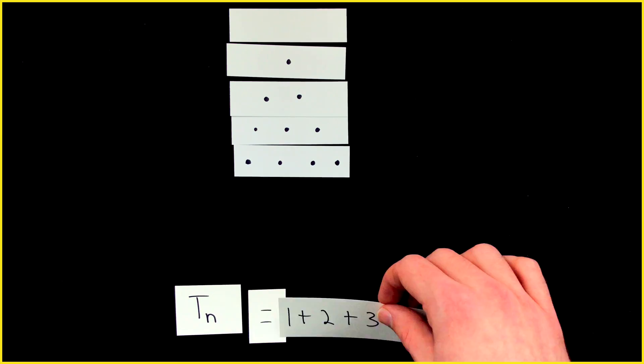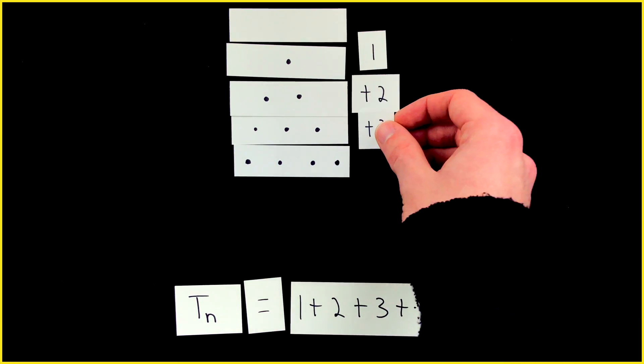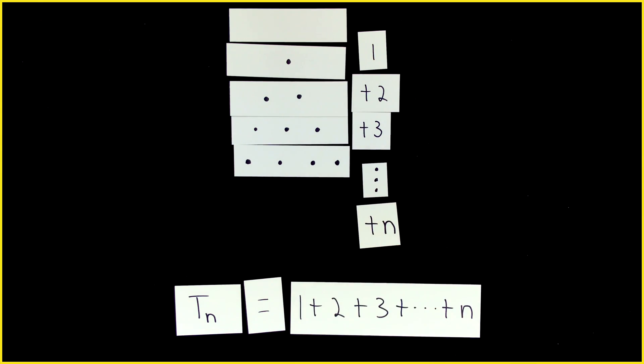The nth triangular number is the sum of the first n positive integers. That's simple, but it isn't exactly easy to compute for large values of n. If we're clever and use some mathematical ingenuity, maybe we can find an even better expression for triangular numbers.